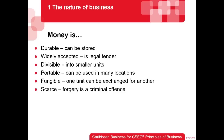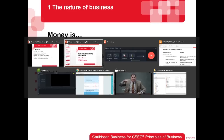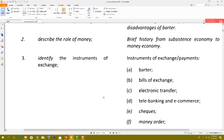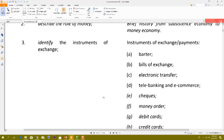Money has certain characteristics or features: it must be durable, widely accepted, divisible, portable, fungible, and scarce. So that's basically it for this first part of the syllabus that speaks to explaining the development of batter and describing the role of money. Next time we're going to look at various instruments of exchange.